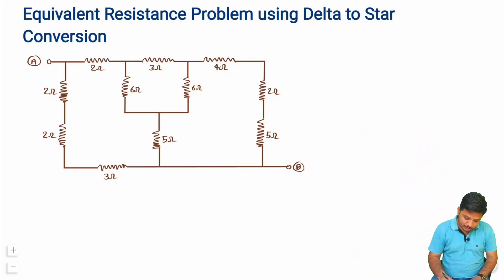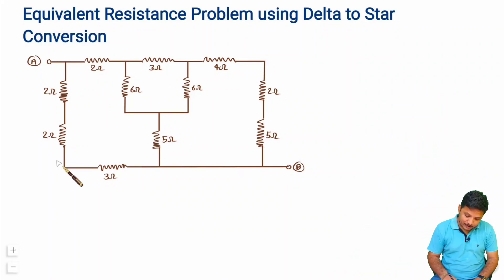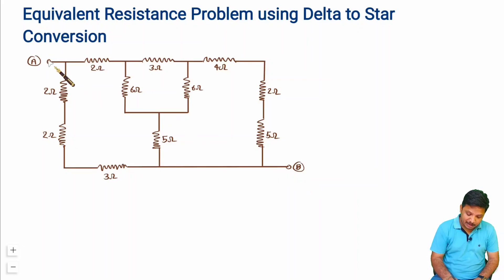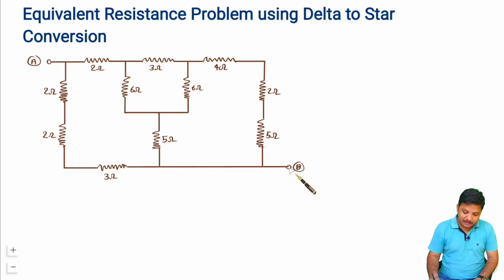Here you can observe we have this equivalent circuit, and this circuit is having terminals A and B. We are required to find the equivalent resistance between terminals A and B. Whenever you have a problem based on equivalent resistance calculation, your first agenda is to identify series and parallel combinations.